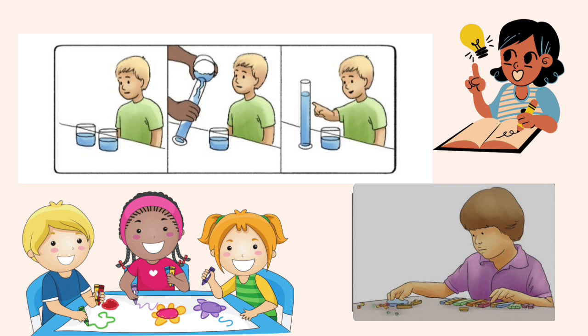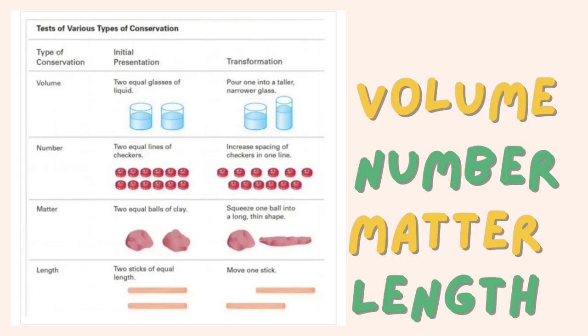Here are some pictorial representations of the process of conservation. There are also various types of conservation achieved by the child at this stage, including conservation of volume, number, matter, and length.